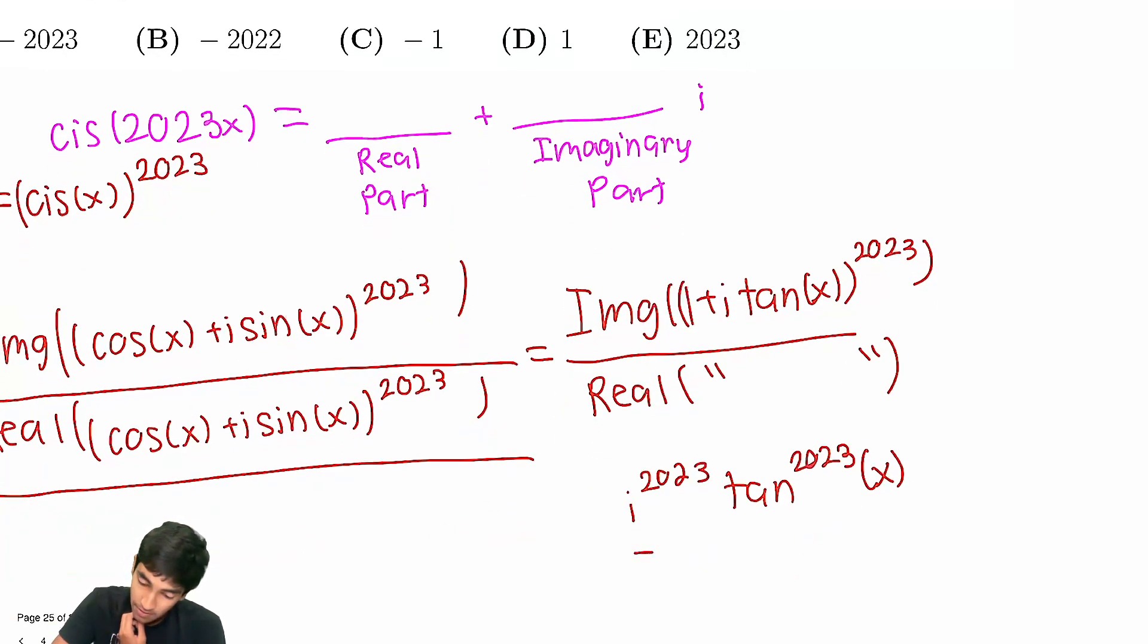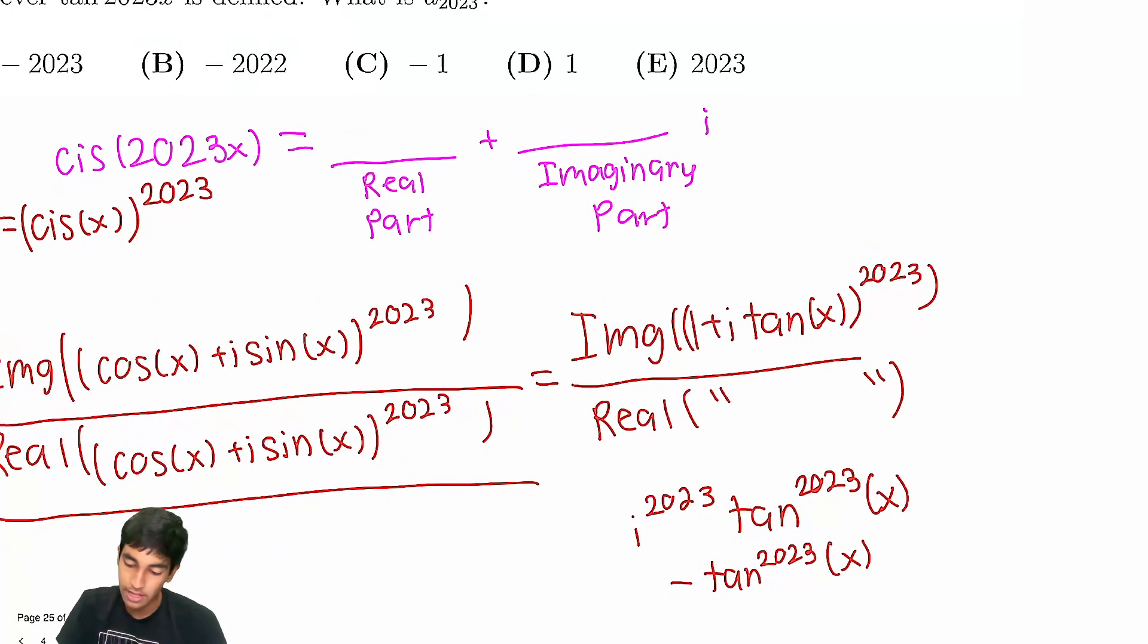And so if we have this here, then now the imaginary part is negative of this, right? This is the imaginary part. Because the imaginary part does not include the i. Therefore, it's just negative this, which is negative 1.